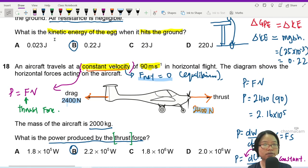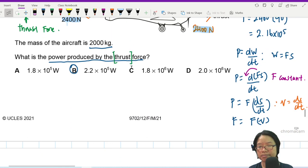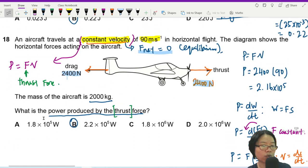So you want to use this equation. Can. Constant velocity. Why I put F here. P is equal to FV. Ask yourself, what power we are looking for. When they say thrust force, that means this F, you will substitute with thrust force.